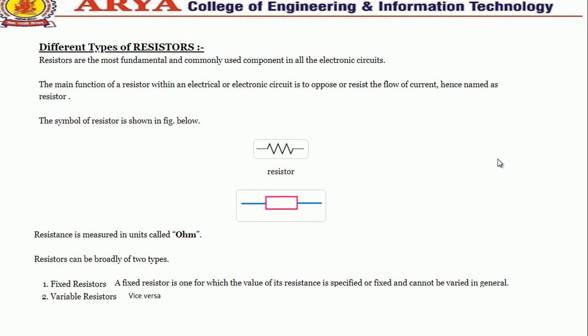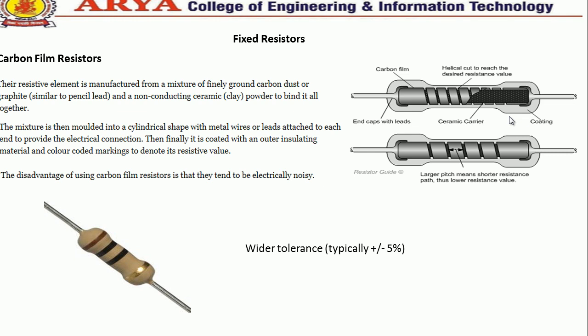For fixed resistors, the first type is the carbon film resistor, which is generally used in electronic circuits. The resistive element is manufactured from a mixture of finely ground carbon or graphite and non-conducting ceramic powder to bind it together. The mixture is molded into a cylindrical shape with a metal lead attached to each end to provide electrical connection.